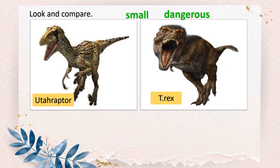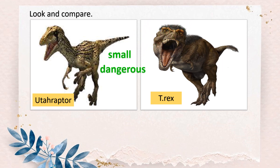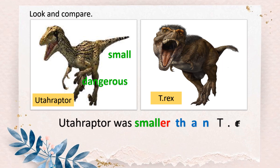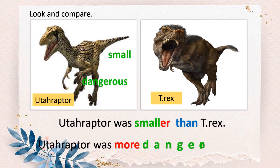Next, look at this. Velociraptor and T-rex — let's compare. Which one was small? Which one was dangerous? Velociraptor was small. Velociraptor was dangerous. Now we are going to compare this using the comparative form of adjectives. Velociraptor was smaller than T-rex — you use -ER and you have the word 'than'. 'Small' is a short adjective, so you use -ER. How about 'dangerous'? Velociraptor was more dangerous than T-rex. 'Dangerous' already has three syllables, so you use the word 'more'. You cannot put -ER.